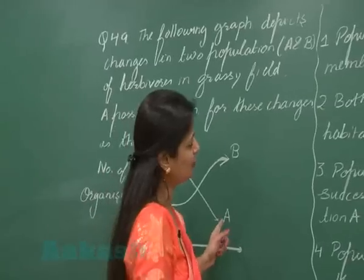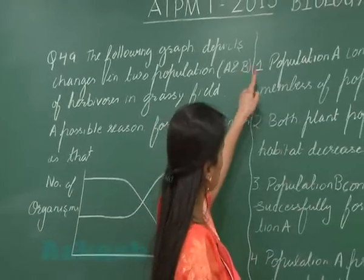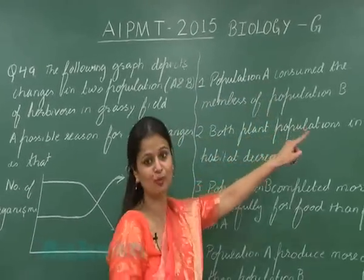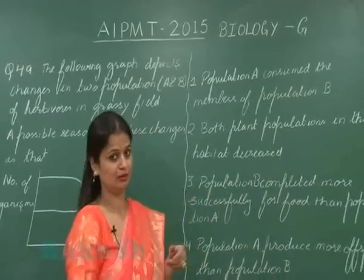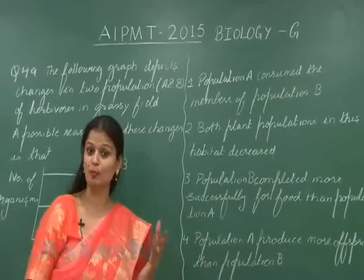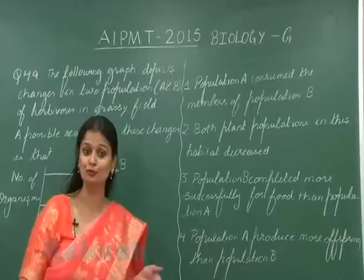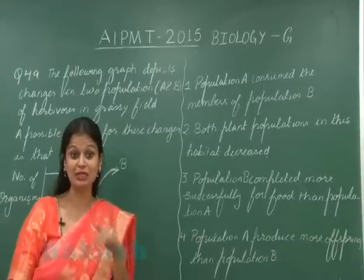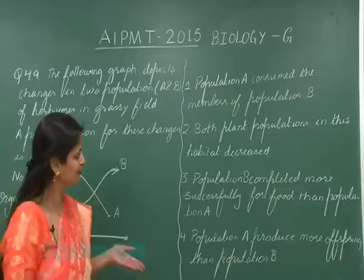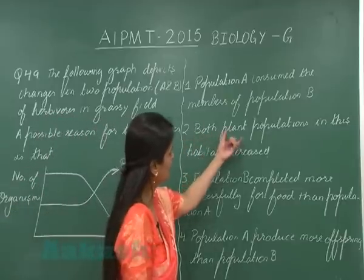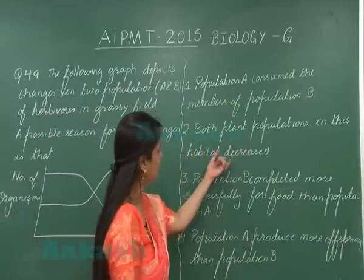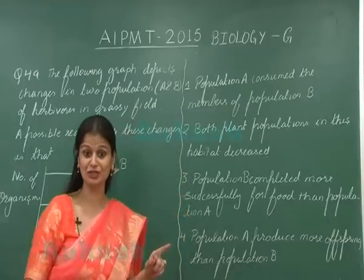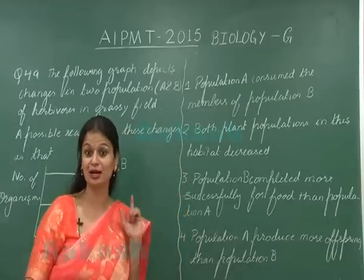Looking at option 1: population A consumed the members of population B. However, these two populations are herbivores, so they feed on plants — they will not feed upon each other. So option 1 is wrong. Option 2 states both plant populations in this habitat decreased, but these are not plant populations — they are herbivores, they are animals. So option 2 is also wrong.